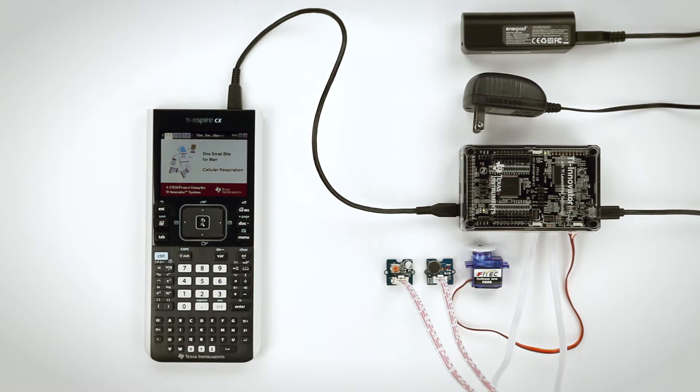Next, you'll need an external power source. A TI wall charger and connecting cable comes with the TI Innovator hub. Or, you can use an external battery kit that is available from Texas Instruments. Either way, use this cable to connect the power source to the TI Innovator hub.